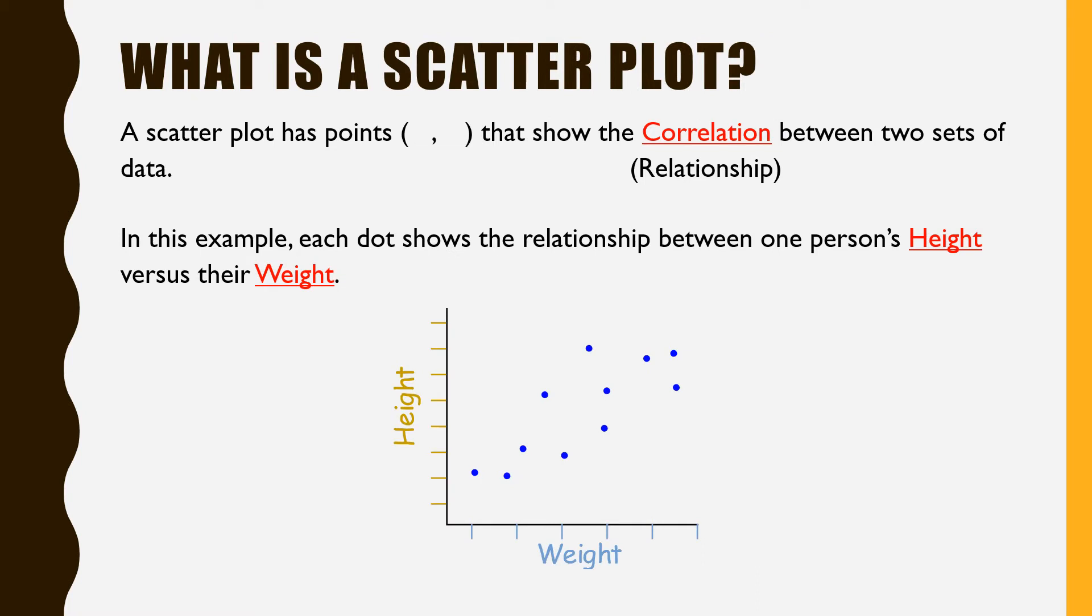So you have your notes. On your notes, you should have written, filled in these red blanks. A scatterplot has points that show the correlation between two sets of data. And correlation is a big word for relationship. And you should have written that word underneath the word correlation. Correlation means relationship. So in this example, each dot shows the relationship between one person's height versus their weight.